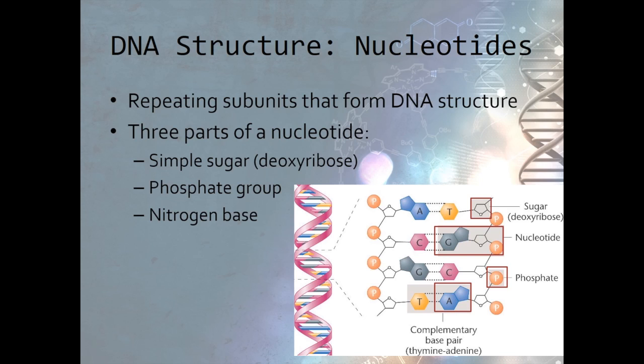The nitrogen base of one nucleotide bonds with the nitrogen base of another nucleotide to form a complementary base pair. We notice from this diagram that the nitrogen bases are labeled as either A, C, T, or G. What does this mean?